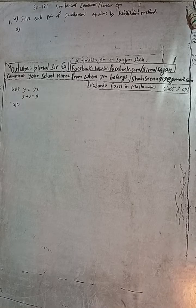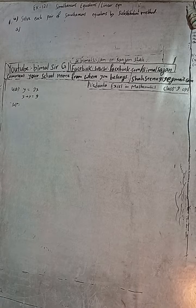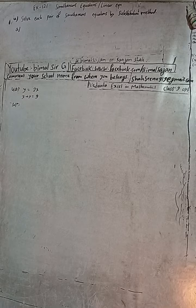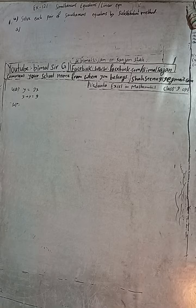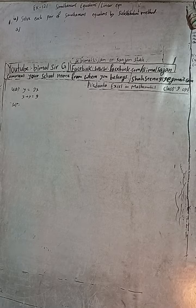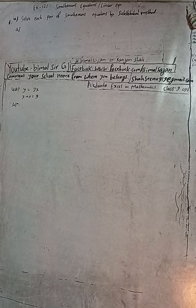Hi Class 9 and 10 students, welcome back to Vimal Sarji's YouTube channel. This is question number 4a, Exercise 12.1 — simultaneous equations, also known as linear equations. In the old book it's called linear equations and in the new book it's simultaneous equations, from Vedant Excel in Mathematics Class 9. Solve each pair of simultaneous equations by substitution method. I have already done three questions using elimination method; now this is substitution method.